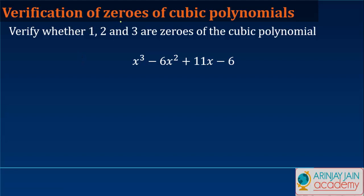Verification of zeros of a cubic polynomial. Verify whether 1, 2, and 3 are zeros of the cubic polynomial x³ - 6x² + 11x - 6.